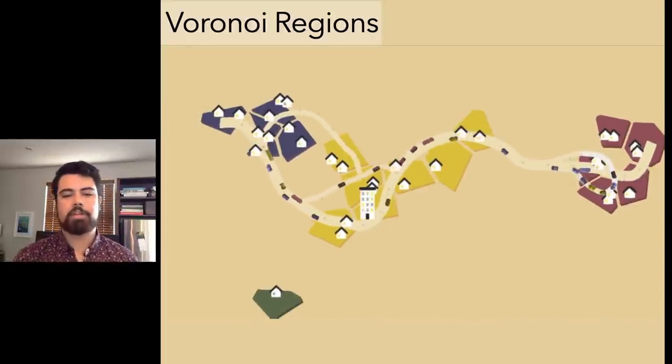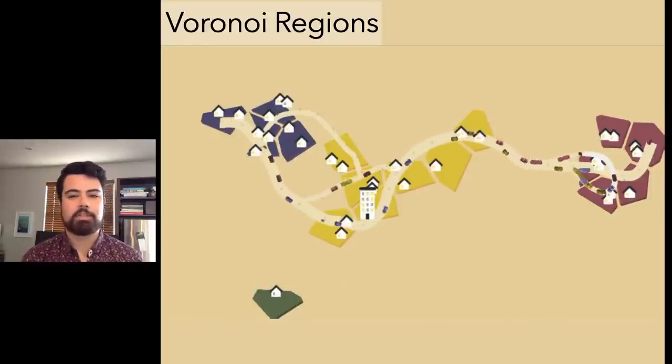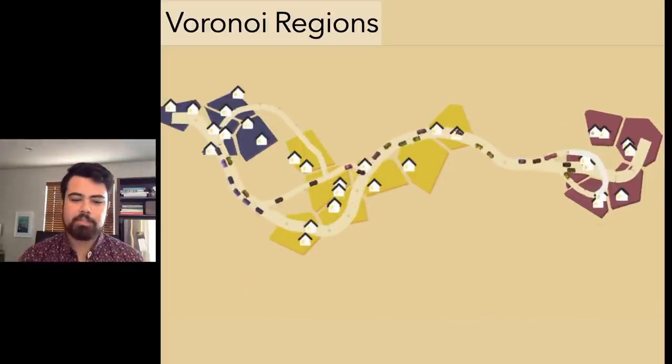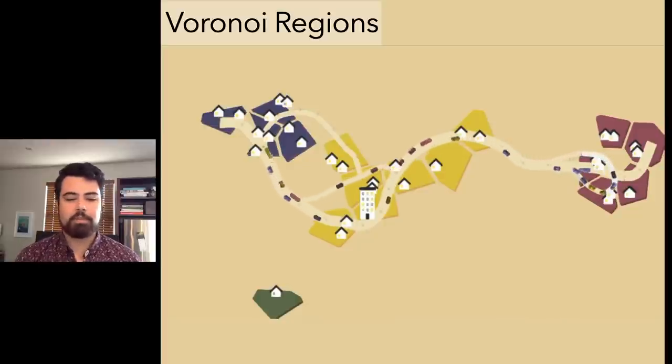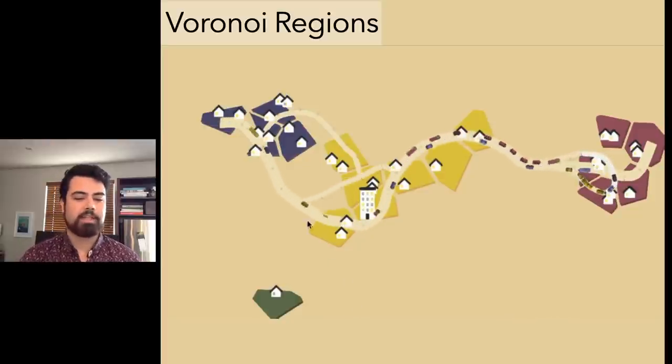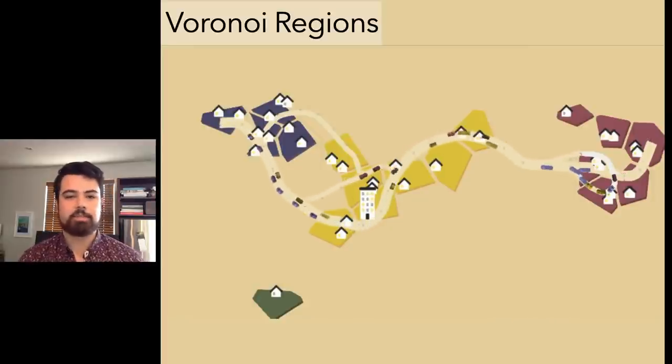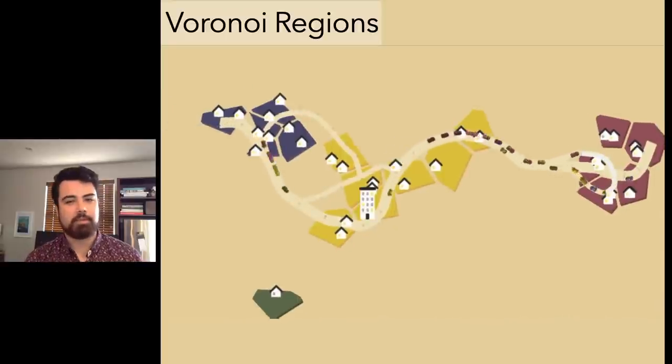This was also the first prototype to experiment with two-way roads rather than one-way roads. It became less about the interchange creation that Freeways has, and more about connecting different areas, kind of like Mini Metro. You also don't have to create return paths to have a full cycle between two points.